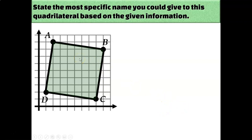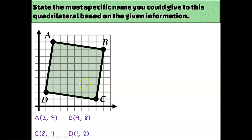We are going to determine the most specific classification we can apply to this quadrilateral. The coordinates are: A(2,9), B(9,8), C(8,1), and D(1,2). This looks kind of like a square, so the first thing I want to do is figure out if these are right angles. If they're right angles, then the sides creating each angle have opposite reciprocal slopes. So I'm going to start by calculating the slopes of all four sides using the slope formula.